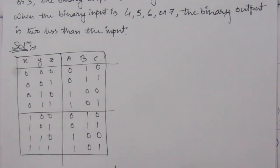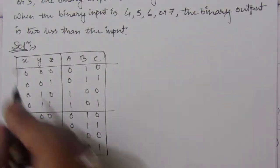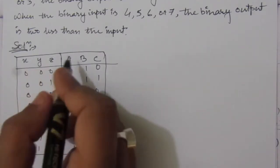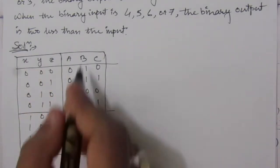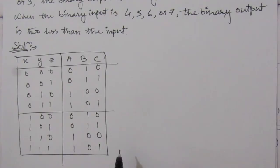So this is the complete truth table. Now what we have to do is find out the three-variable K-map — because it is a three-variable problem — for outputs A, B, and C separately. Finally we have to draw the logic circuit.